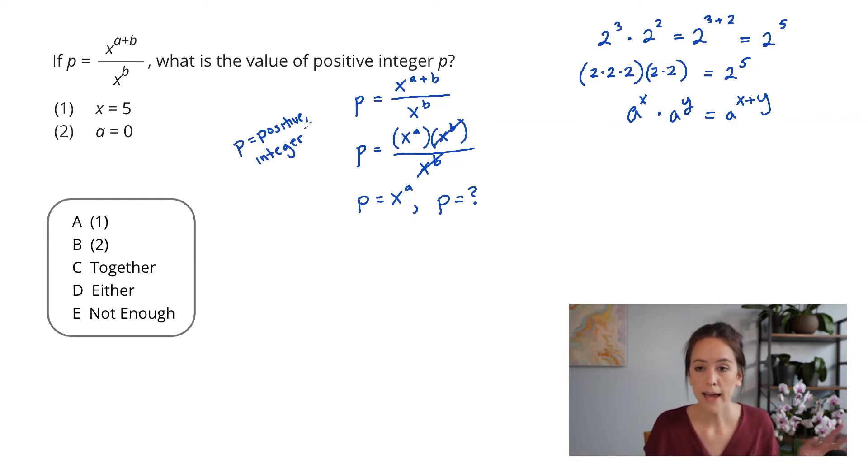Okay, so now I have all of this information mapped out. I've simplified the question stem really beautifully. And I want to take a quick moment just to ask myself, is there anything more I could do here? Could I make this even more simple? And the answer in this case is no. x to the a is about as simple as it's going to come. And so I'm ready to go ahead and move into the statements.